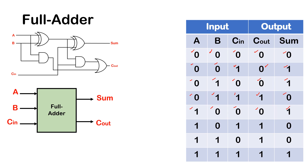The next one: A=1, B=0. Partial sum is 1, and this time C-in is 1. So adding them up, sum is 0 and we generate a carry. So sum is 0 and carry-out is 1.